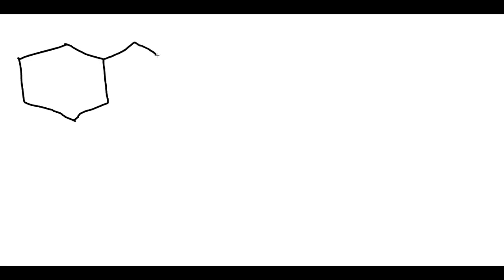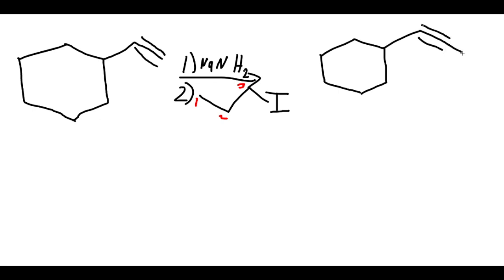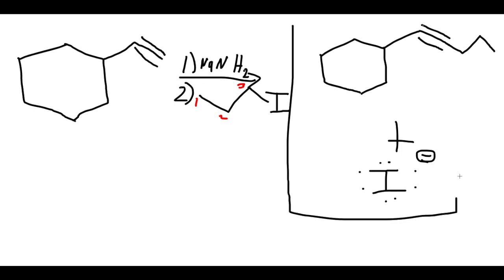Now with this next structure — cyclohexane with a terminal alkyne — we use the same reagents: NaNH2 and NH3. Our second reagent is an alkyl halide. We redraw our structure, and all we do is add how much carbon we have to add: one, two, and three. So three carbons. We draw the terminal alkyne, then one, two, three. We also have the iodine. This is our answer for this product.